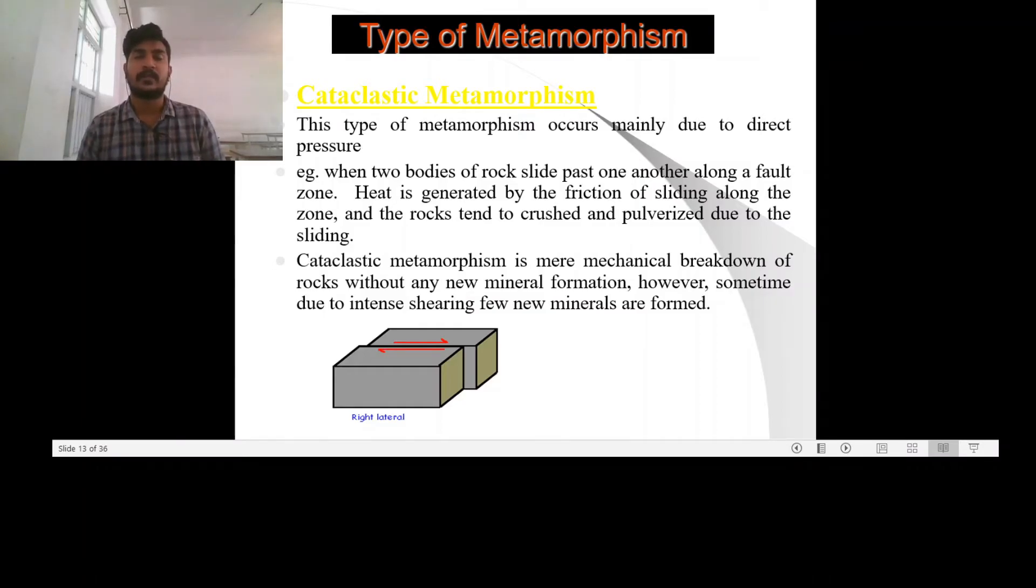There is a small temperature also in this type of metamorphism. This temperature may be formed as a result of the friction and heat produced due to the faulting or the thrusting.